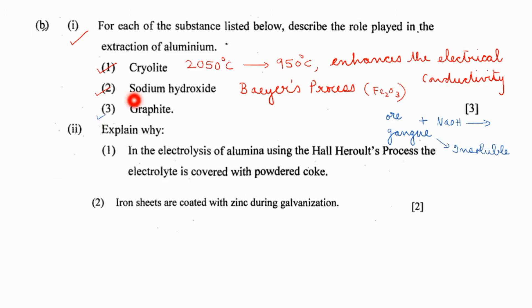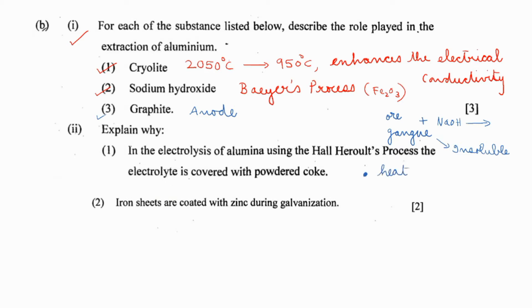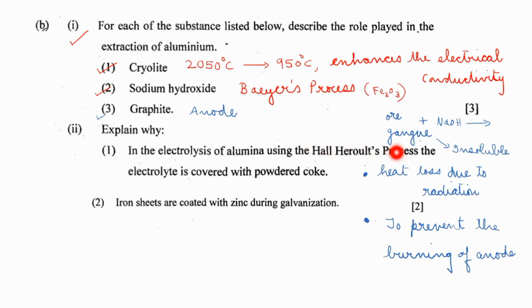What's the role of graphite in the electrolytic extraction of aluminium? Graphite is used as the anode for the process. Next question: explain why in the electrolysis of alumina using Hall-Heroult's process, the electrolyte is covered with powdered cork. The answer is to prevent heat loss due to radiation, and also to prevent the burning of the anode. We have discussed all this in the Hall-Heroult's process video in detail.